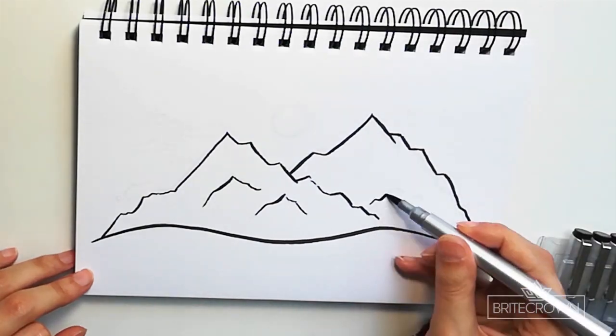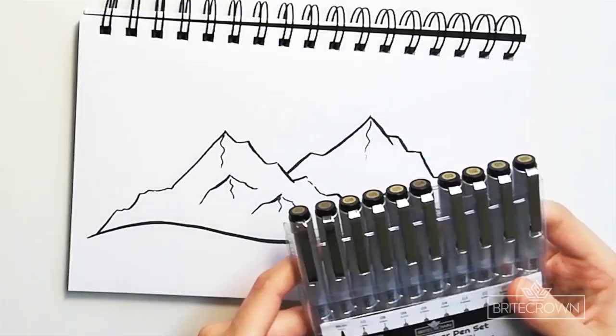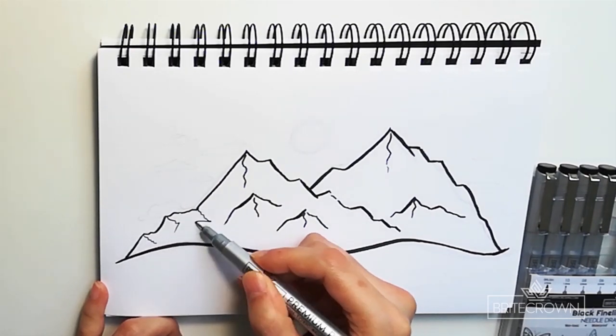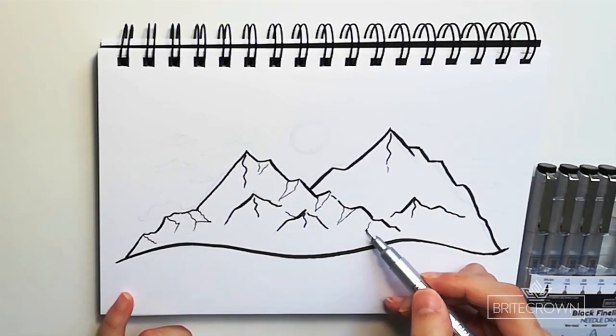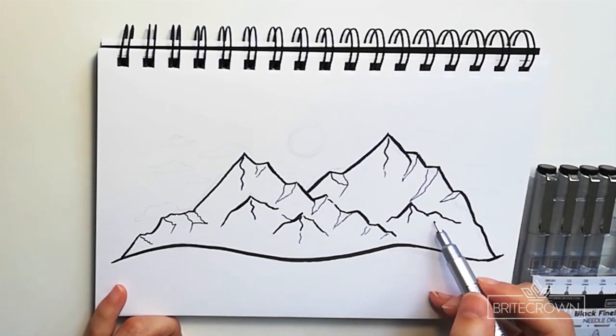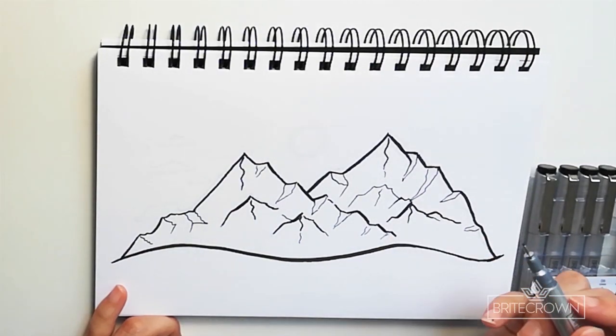So I started off using the brush tip to create the bold outlines. Then I moved on to a medium sized tip, the size 5, to create some contours and create some shape to the mountain edges.